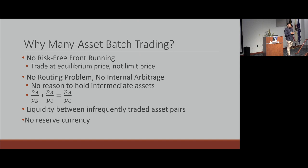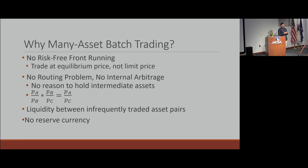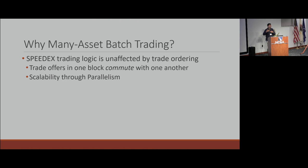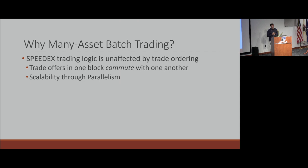There's a batch with many assets, and the price in that batch is fixed — it's a linear price. Because things are in a batch, the trading logic is unaffected by the ordering of the trades. Trades in one block commute with one another, which from an algorithmic point of view is obvious, but for systems designers it's a big advantage. Once you've computed the prices, you can immediately figure out what trade happens and what doesn't. You don't have to do them in any order, which means you can parallelize them. Executing, writing to disk, and assembling the block in parallel ends up being a big computational advantage.